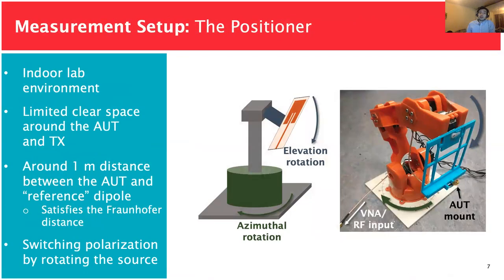We looked at commercial positioner options and found that one of the simplest and easiest to communicate with is an Arduino-based robotic arm. The robotic arm can move in all directions, but we're only using two of the rotating servos: one to achieve azimuth rotation and one to achieve elevation rotation — shown in green and blue respectively. This way we can position the antenna in a hemisphere with a precision of up to one degree to obtain our hemispherical patterns.